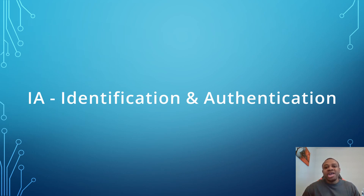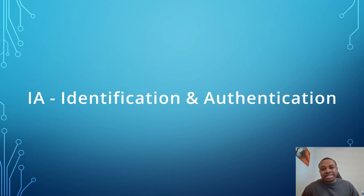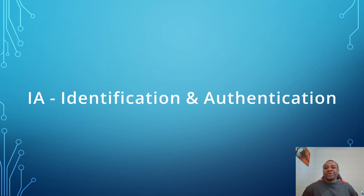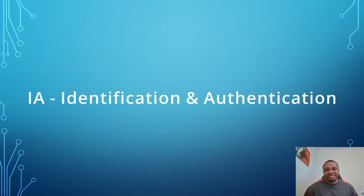Identification and authentication focuses on identifying information system users, processes acting on behalf of the users, and authenticating the identities of the users, processes, or devices as a prerequisite to allowing access to organizational information systems. Simply put, identification and authentication is the process by which a subject professes an identity and the process of verifying that the claimed identity is valid. We'll be looking at some of the controls that fall under the identification and authentication control family.